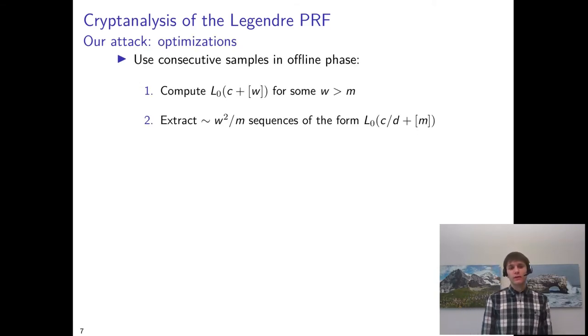A number of optimizations to this attack can be made. One is that we can use consecutive samples in the offline phase. This means that we first compute a sequence of Legendre symbols of length w, and then extract nearly w squared sequences from it.